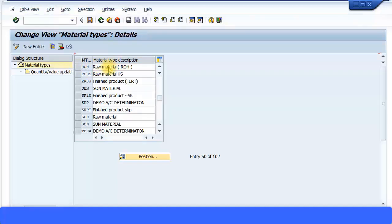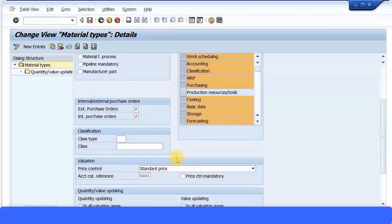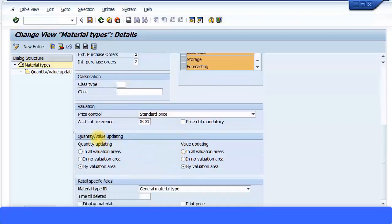If I scroll down, you can see 'Quantity/Value Updating.' Because the Bills of Materials is all about the material list and their quantity, I need to ensure that the quantity and values are updated. Here, if it's mentioned 'in all valuation areas,' you don't have to go and do any ticks in the next step.